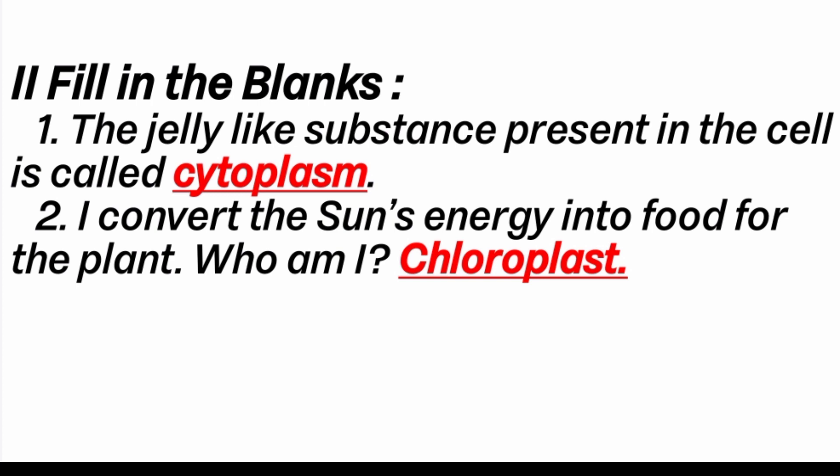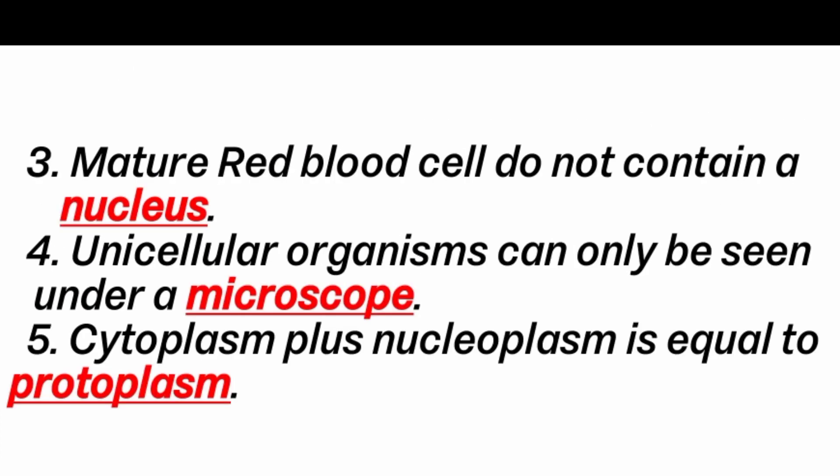Third fill-in-the-blank: mature red blood cells do not contain a dash. Answer is nucleus. Young RBCs contain a nucleus, but mature RBCs do not contain a nucleus because the nucleus space is occupied by hemoglobin content.